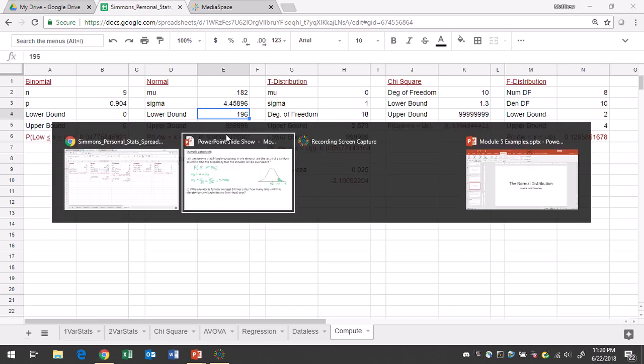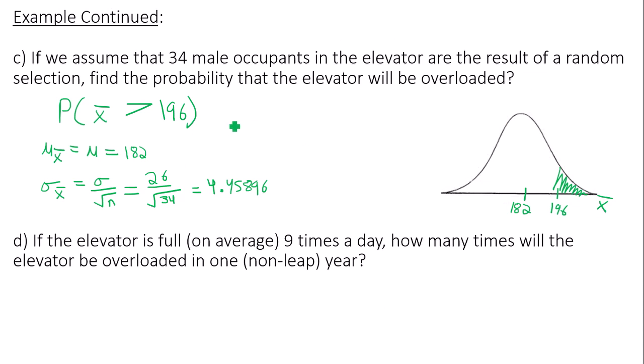You can keep more decimal places if you want, but 0.0008 will be what we used. So this is the probability that the elevator will be overloaded.